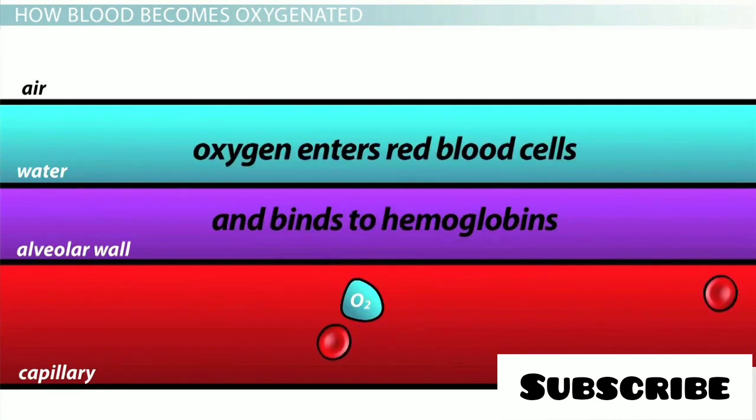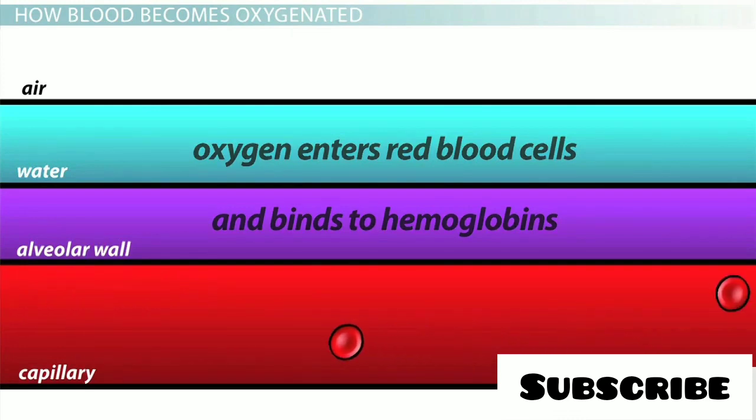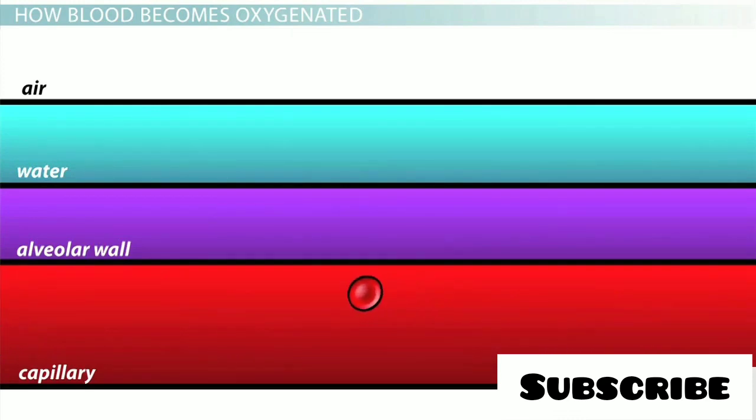Once in the blood, you may also remember that oxygen enters red blood cells and then binds to hemoglobin, taking it out of solution and keeping the dissolved oxygen level low in the blood. This ensures that the oxygen continues to flow from the alveoli and into the blood.